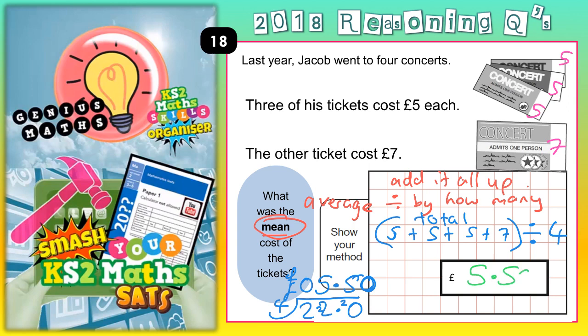The other way you could have done that is: any time you're dividing by 4, you halve it and halve it again. Half of £22 is £11, and half of £11 is £5.50. So whichever way you do it, your final answer — the mean cost — is £5.50.